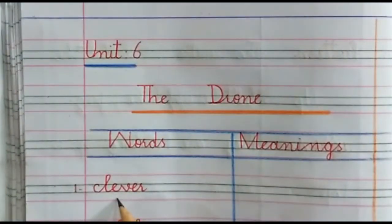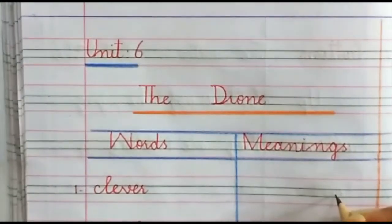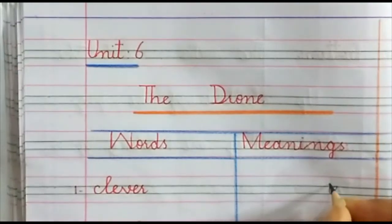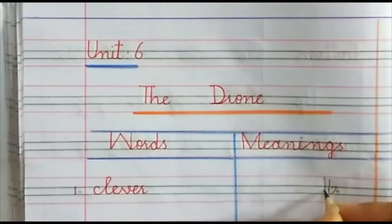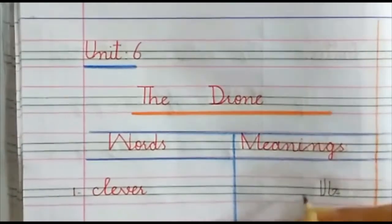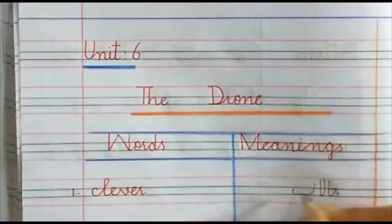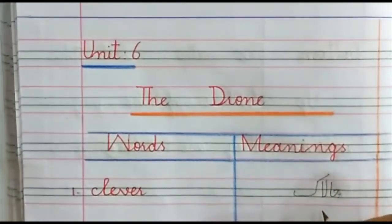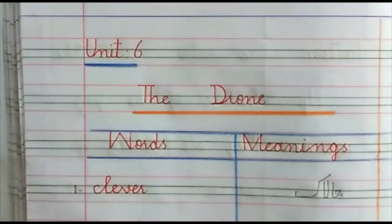Number one word is clever. Clever means chalak. Clever means chalak. Let's move to the next word.